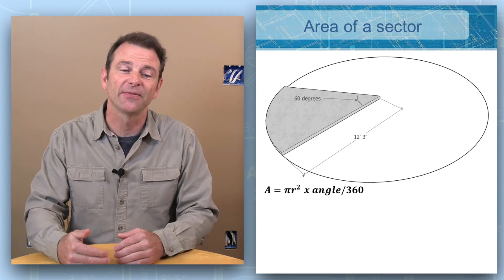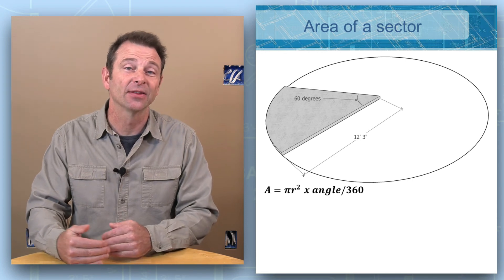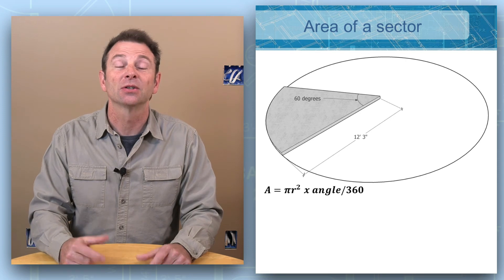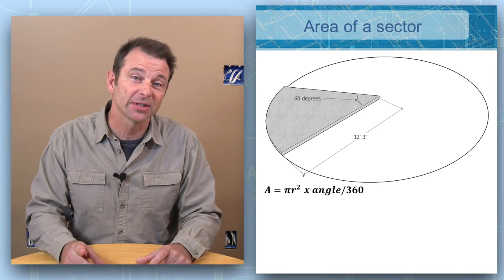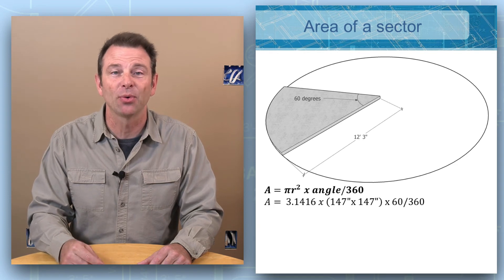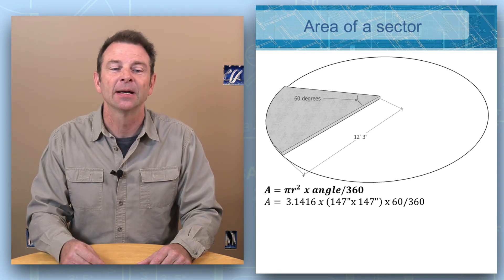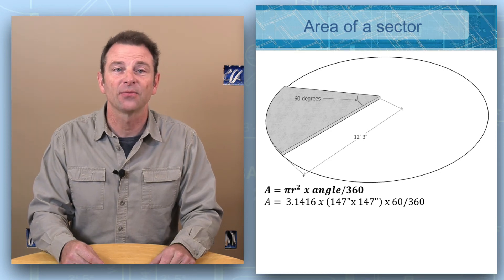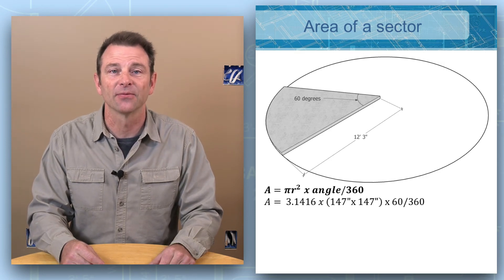...the angle of this wedge divided by 360. So 360 is going to be the entire degrees of the whole circle, and we're basically figuring out by the angle and the 360 what portion of the whole we have here. So we can put in our numbers that we know, and that's going to be A equals pi, which is 3.1416, multiply that times our radius squared, which is 147 inches times 147 inches...